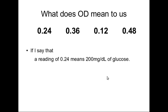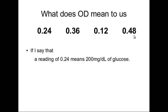Rephrasing this: if I use a solution whose concentration I know, test it, and find its optical density — for example, a solution of 200 mg/dL gives an OD of 0.24 — then I know that OD for that concentration, and I can find the concentrations of all other solutions. A solution whose concentration I know and which I use to analyze other solutions is called a standard or a calibrator.